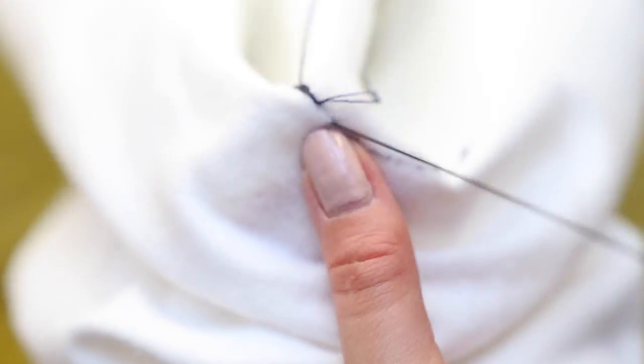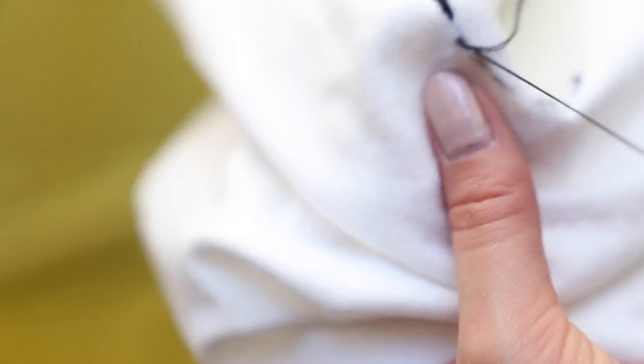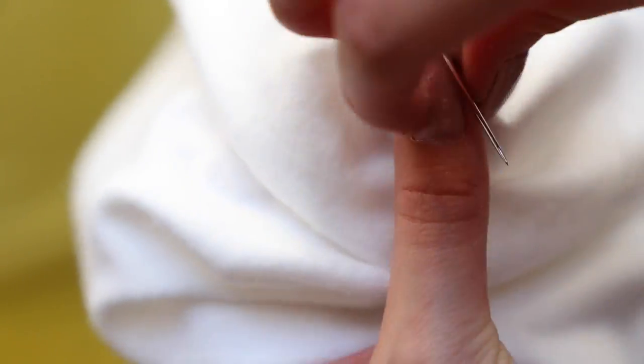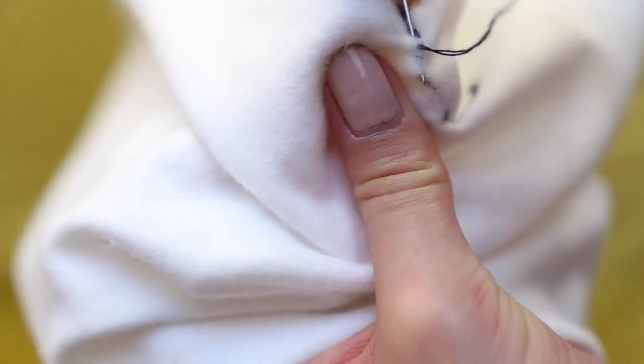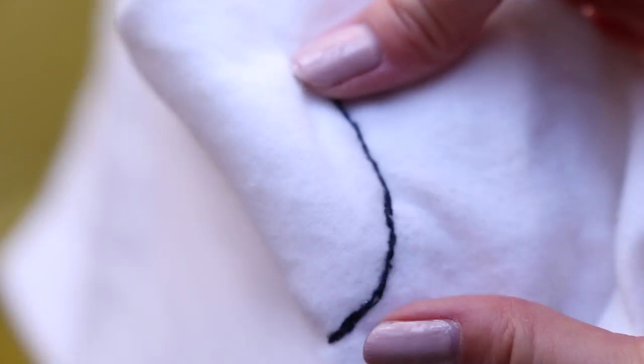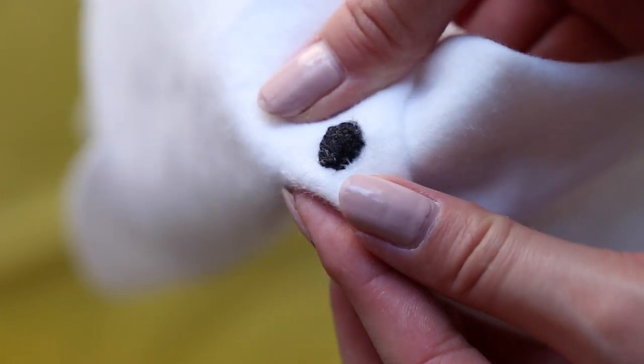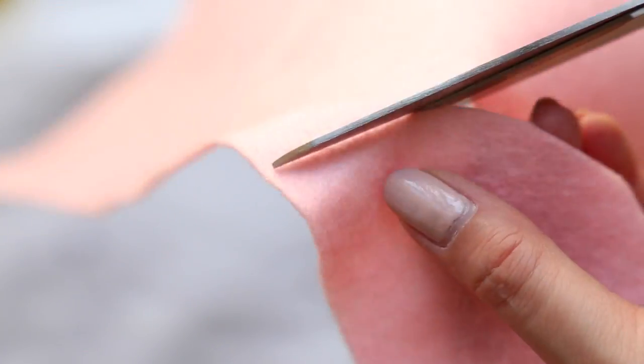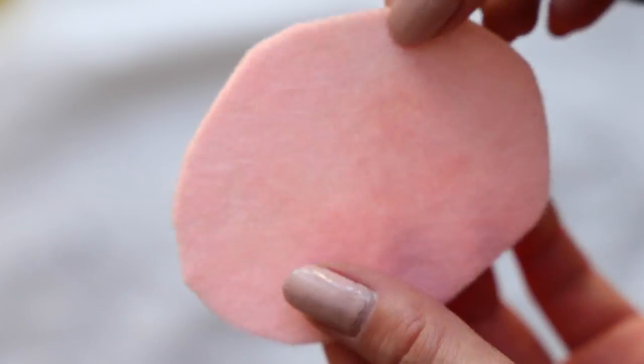For the mouth, I'm using a backstitch and following the line I drew in. Next, we're going to add on the blush. Take some pink felt and cut out two oval shapes.